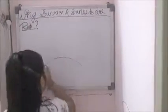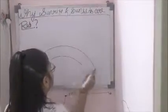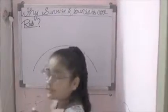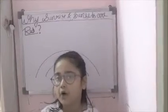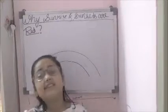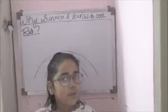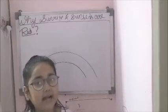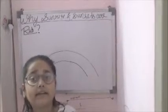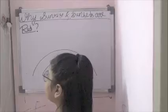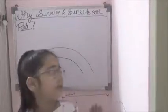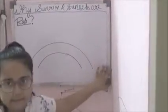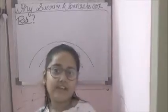Suppose this is the Earth and its atmosphere. Now let's look at the case of sunrise and sunset. At sunrise and sunset, the sun will be near the horizon. Horizon is the point where the sky meets the land. Sunrise will be in the east, and sunset will be in the west.